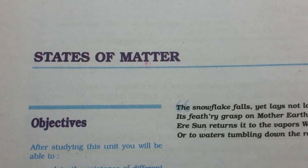5.9 Liquefaction of Gases. First complete data on pressure, volume, and temperature relations of a substance in both gaseous and liquid states was obtained by Thomas Andrews on carbon dioxide. He plotted isotherms of carbon dioxide at various temperatures. Later on, it was found that real gases behave in the same manner as carbon dioxide. Andrews noticed that at high temperatures, isotherms look like those of an ideal gas and the gas cannot be liquefied even at very high pressure.